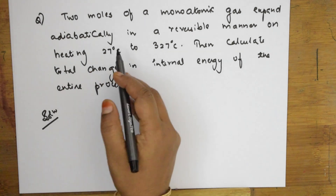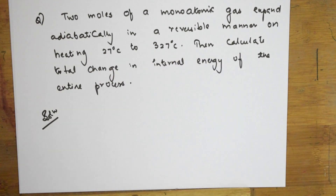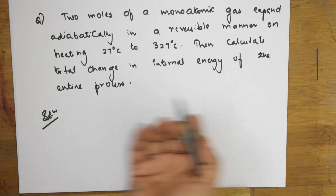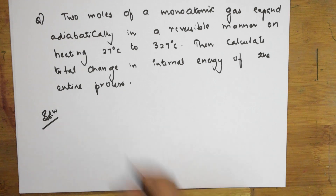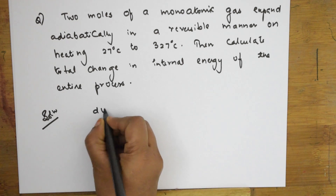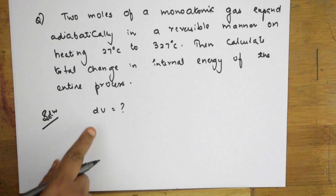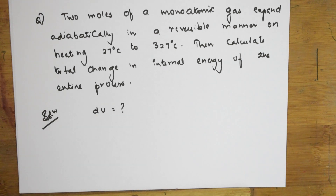Let's read the question: Two moles of a monoatomic gas expands adiabatically in a reversible manner on heating from 27°C to 327°C. Calculate the total change in internal energy of the entire process. So basically, I need to find ΔU, the change in internal energy.